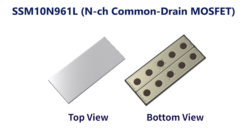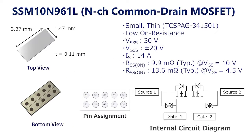SSM10N961L is the newly developed N-channel common drain MOSFET. It comes in a small package with a length of 3.37 millimeters, a width of 1.47 millimeters, and a thickness of 0.11 millimeters. It has a withstanding voltage rating of 30 volts, a maximum current rating of 14 amperes, and a low on-resistance. Therefore it is ideal for bi-directional power supply applications using USB power delivery.